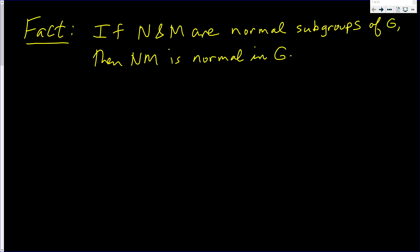This video we're going to prove the following fact. If N and M are normal subgroups of G, then N and M, their product, is also normal in G.